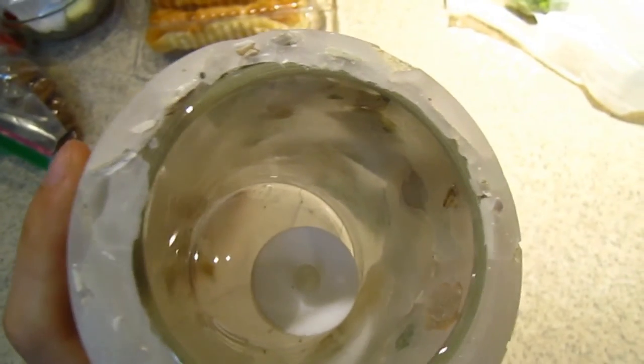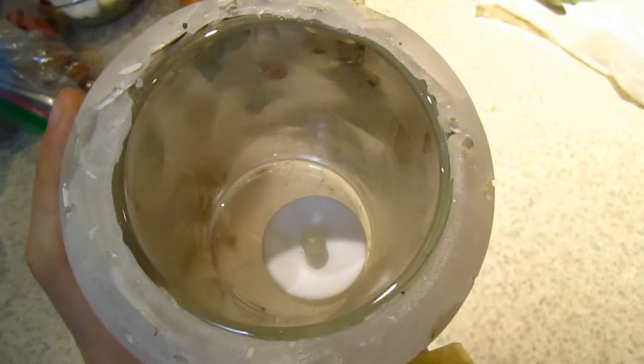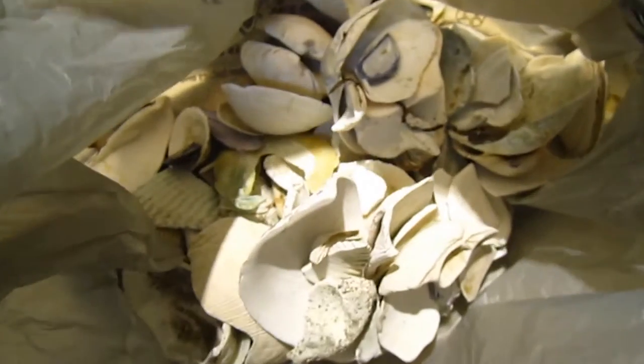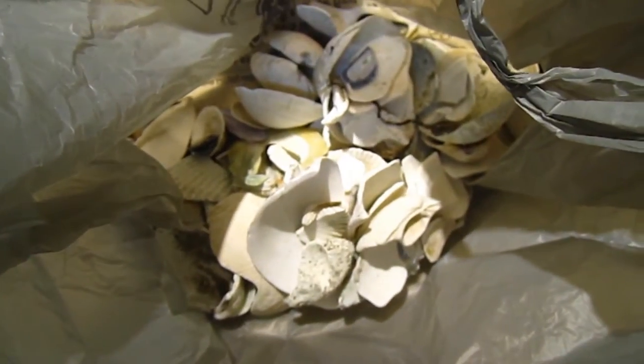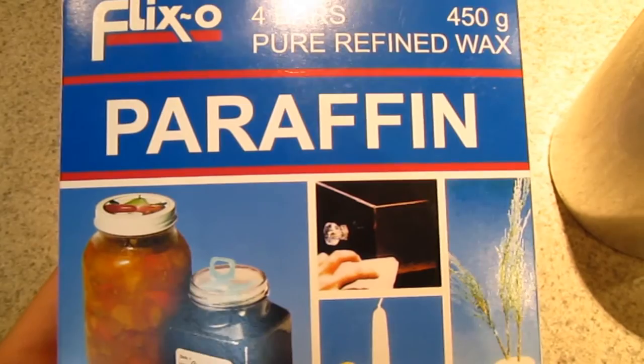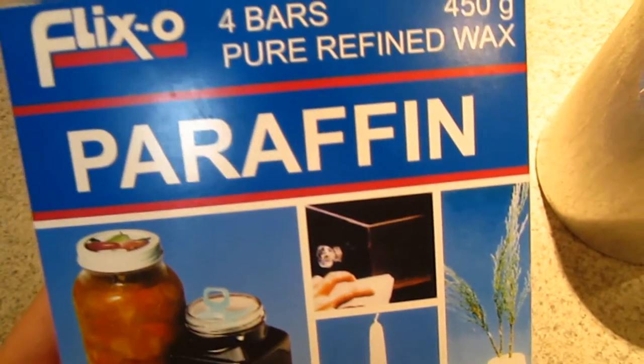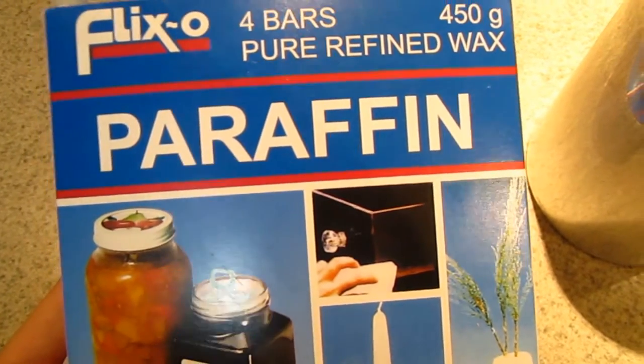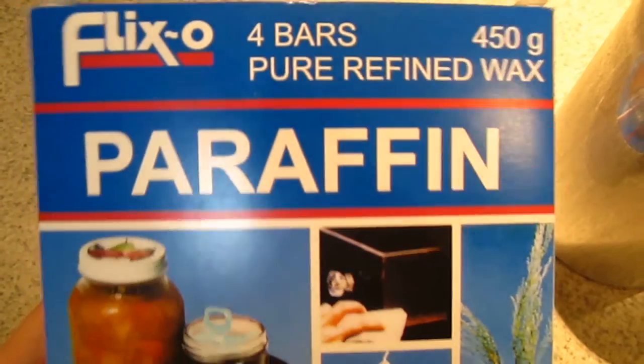I also purchased battery operated tea lights from a dollar store. You can buy seashells or gemstones from the craft store but I found these on the beach. The last thing you'll need to purchase is paraffin wax which is usually surprisingly cheap. I found mine in the canning section of the grocery store.